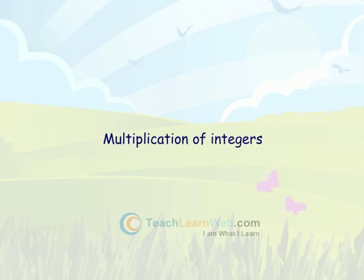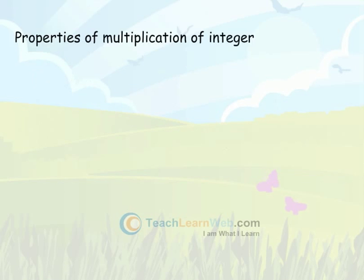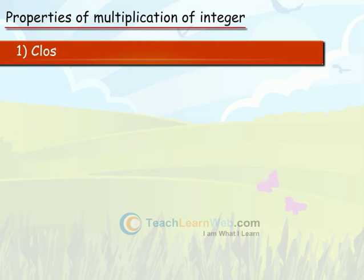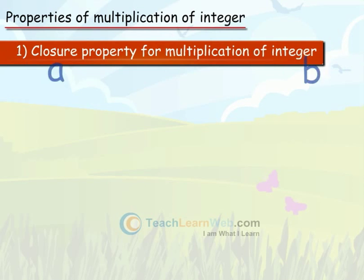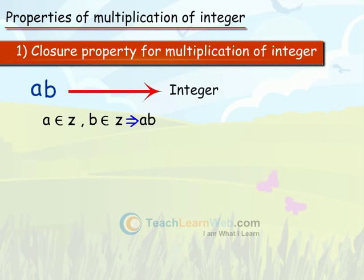Multiplication of Integers — Properties of Multiplication of Integers. Closure Property for Multiplication of Integers: The product of two integers is always an integer, i.e., a belongs to Z and b belongs to Z implies a×b belongs to Z.